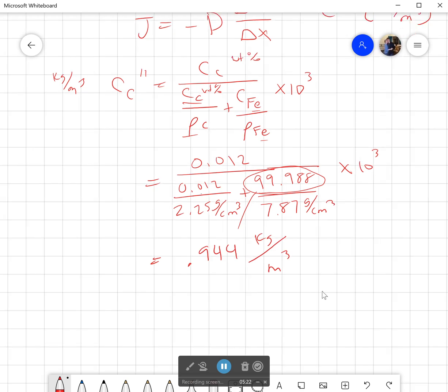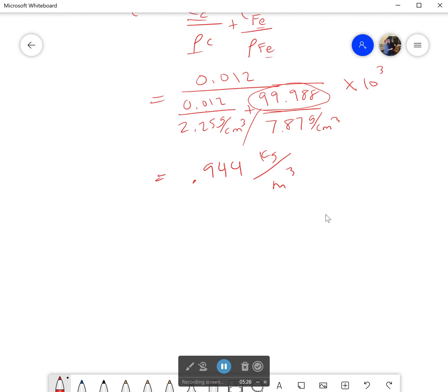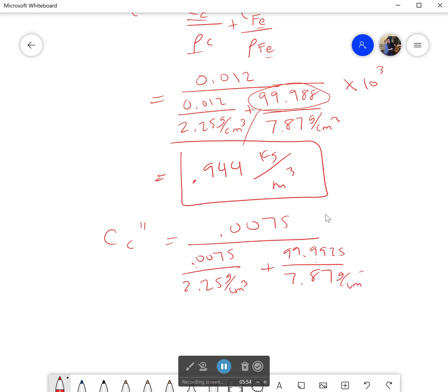Now let's do the second one. I'm just following all these steps. I'm going to go ahead and put a box around this so I don't forget. So it'll be equal to 0.0075 over 0.0075. This is the carbon right here. And this one right here is coming from the fact that everything has to add to 100. This times 10 to the third is to get us to kilograms per meter cubed. If I do that, I get 0.590 kilograms per meter cubed. Of course, it's kilograms carbon per meter cubed, not kilograms of everything per meter cubed.